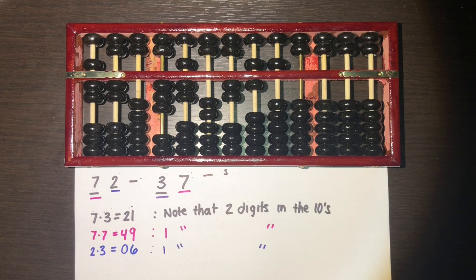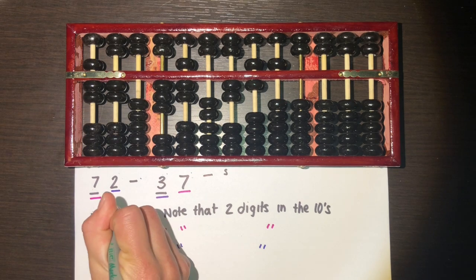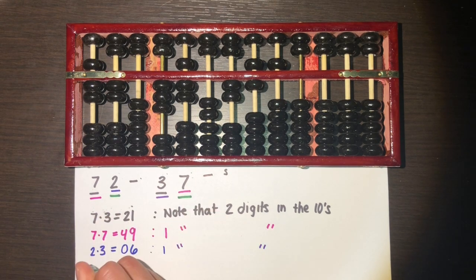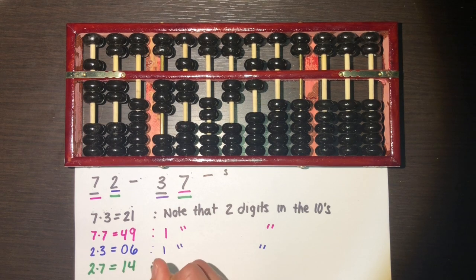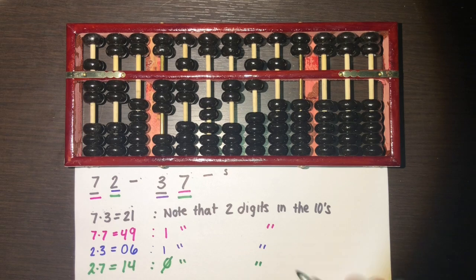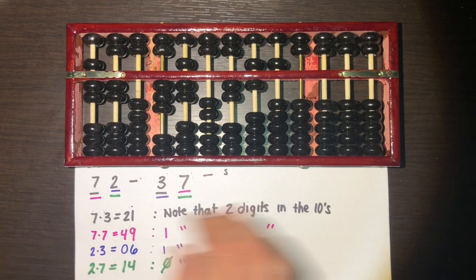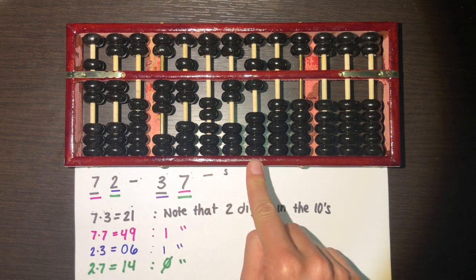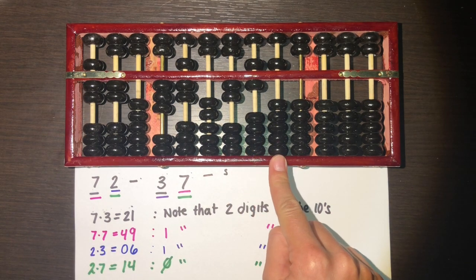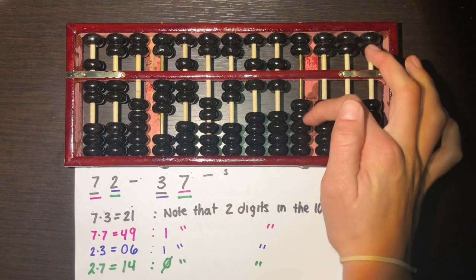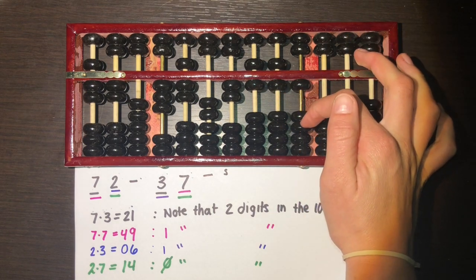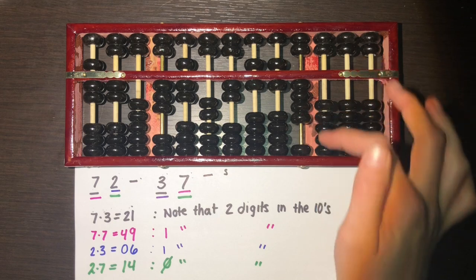Then we move to our last multiplication: two times seven equals 14. We have zero digits in our tens spot for that multiplication, so the difference is two. We go two to the right of our starting spot and add one ten there, then four ones to the right of it.